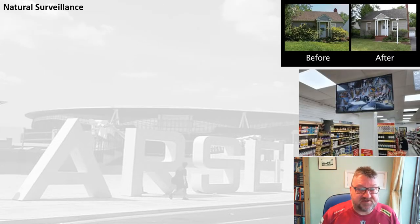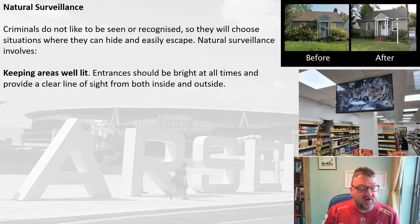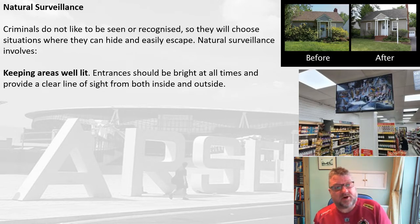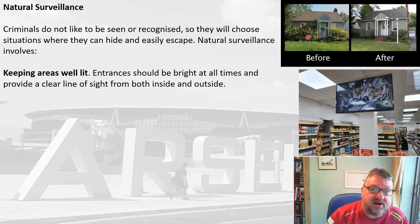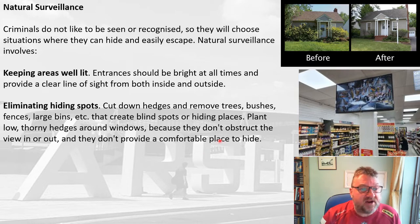Starting with natural surveillance: CPTED argues that criminals don't like to be seen or recognised, so they choose situations where they can hide and easily escape. Natural surveillance involves keeping areas well lit so it's hard for criminals to hide. Entrances should be bright at all times with a clear line of sight from both inside and outside. Anything that creates a blind spot or hiding place is discouraged — cutting down hedges, removing trees and bushes, removing fences and large bins that obstruct views.